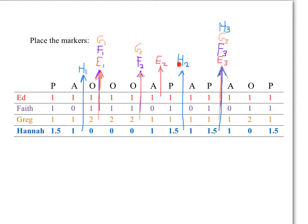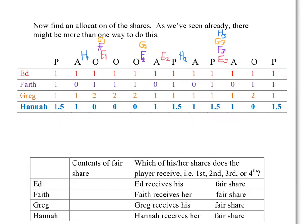Before you continue, I recommend pausing the video here and seeing if you can figure out an allocation of the shares to the players. Now we find an allocation of the shares. As we've seen in the previous example, there might be more than one way to do this.